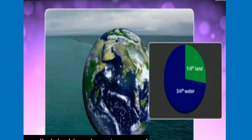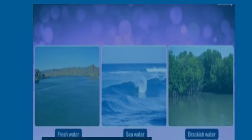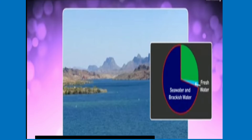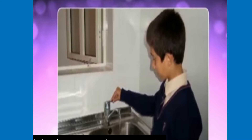About three-fourths of our earth, also called the blue planet, is covered with water. This water is present as fresh water, sea water, and brackish water. Out of this, only 3% is fresh water, while the rest is sea water and brackish water. This is why we must always use water carefully and not waste it.